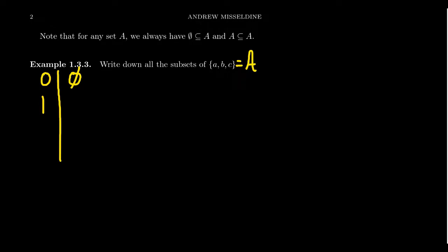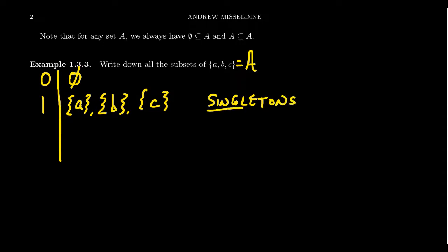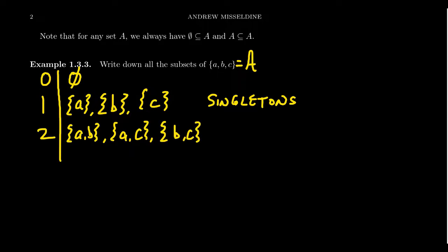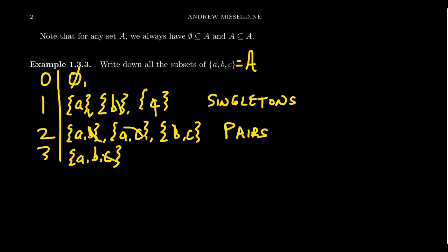For this example with only three elements, I'll write down all subsets based on their cardinality. Subsets of cardinality zero: there's only one, the empty set. Subsets of cardinality one — singletons containing a single element: {a}, {b}, or {c}. Subsets of cardinality two — pairs: {a, b}, {a, c}, and {b, c}. And finally the subset of cardinality three, which is the whole set {a, b, c} itself. Counting them all up: 1, 2, 3, 4, 5, 6, 7, 8 — there are eight subsets in total.